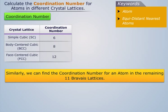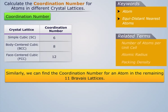Similarly we can find the coordination number for an atom in the remaining 11 Bravais lattices. Related terms are shown.